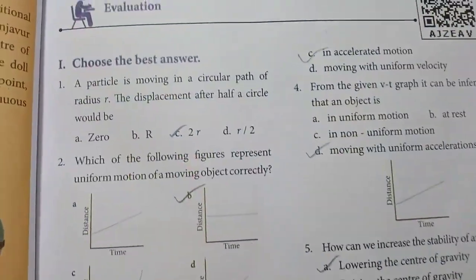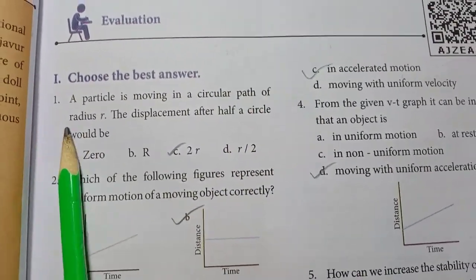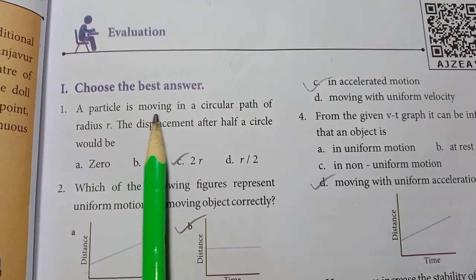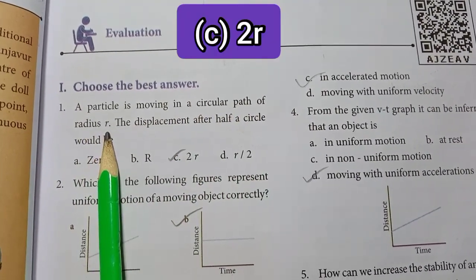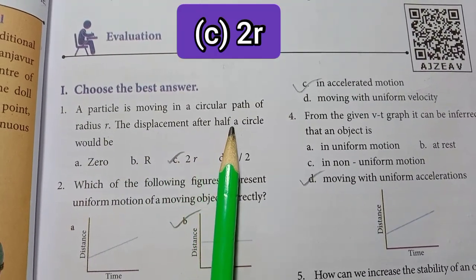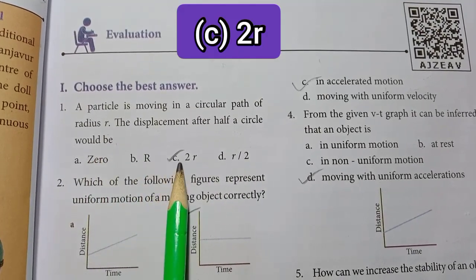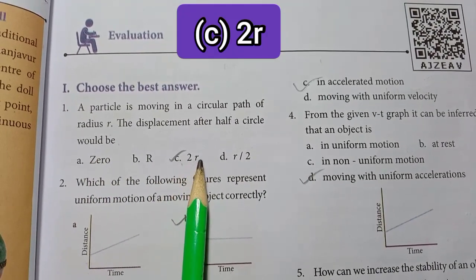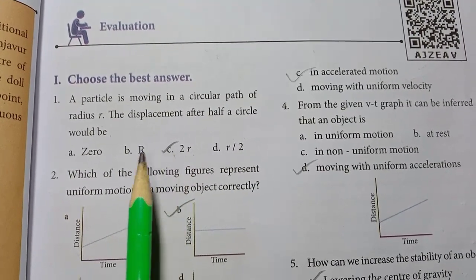Roman numeral 1: Choose the correct answer. 1st one — a particle is moving in a circular path of radius R; the displacement after half a circle would be option C: 2R. Option C is the answer.